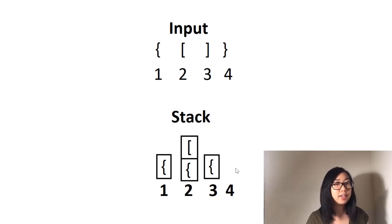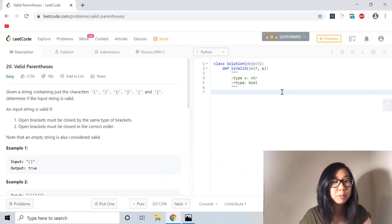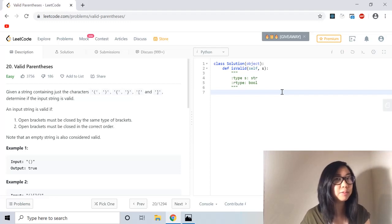If the stack is not empty, that means one of the opening strings didn't have a closing string, or there was a closing string with no corresponding opening string, or they were just in the wrong order. Let's code that out. I'm going to start by creating my own stack data structure. Python already has lists whose data structure is very similar to the stack, but I just wanted to create my own just for fun.